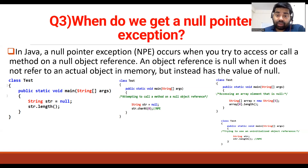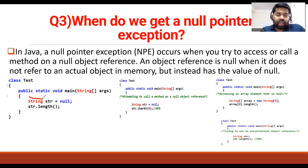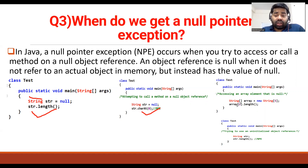There are multiple scenarios where you get a NullPointerException. For example, if you have a String whose value is null and you try to find its length, you will get a NullPointerException. Another scenario: if you have a null String and try to perform some operation on it. Also, if you have a String array and try to find the size of an element at index zero when the array is empty and null by default, you will get a NullPointerException.